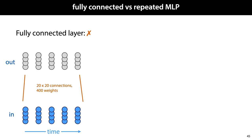So we could build a fully connected layer here, simply connecting each of the 20 input values to each of the 20 output values, giving us 400 weights. This is not a sequence-to-sequence layer. Why not?